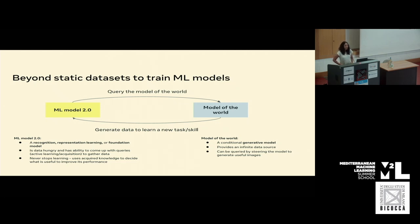On the other side of the slide, we have the model of the world. In our case, and for the purpose of this talk, it will be a conditional generative model. This conditional generative model provides an infinite data source and can be queried by steering it to produce any examples useful to train the downstream machine learning model 2.0. We have this interaction between the two models: the machine learning model being trained requests specific kinds of data from the world model in order to improve its own performance.